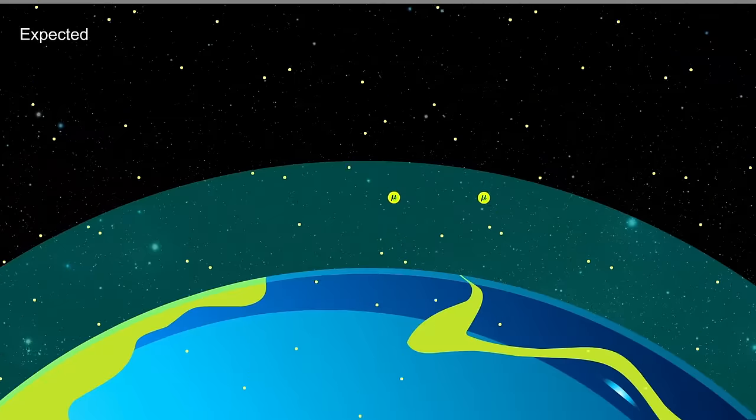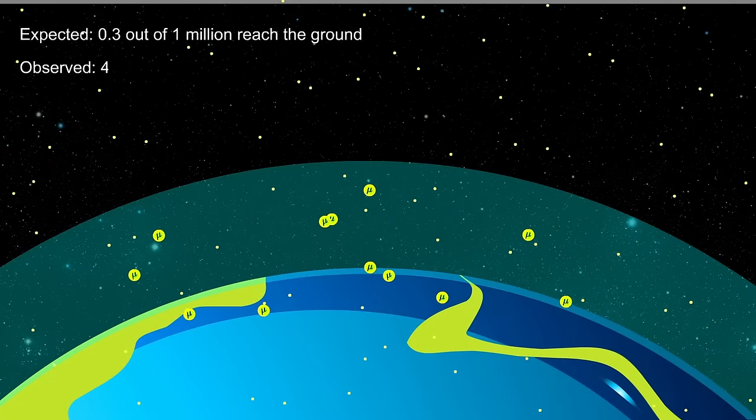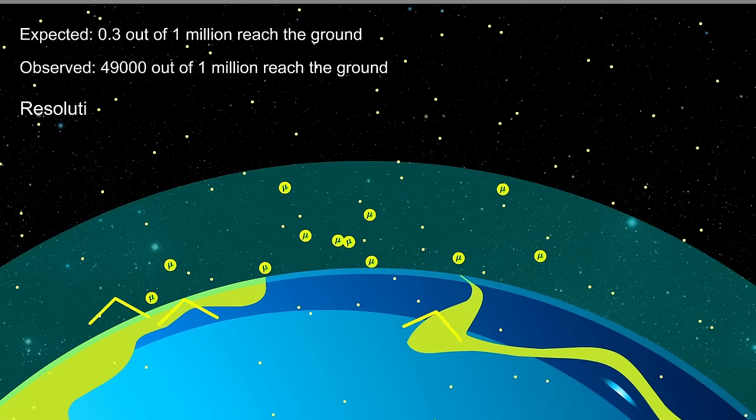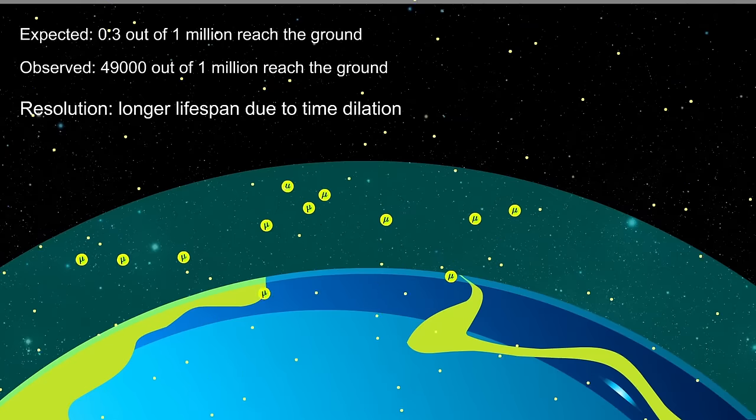You probably know about the muon paradox, where we detect much higher flux of muons from the upper atmosphere than we should considering their mean lifetime. The explanation is time dilation.